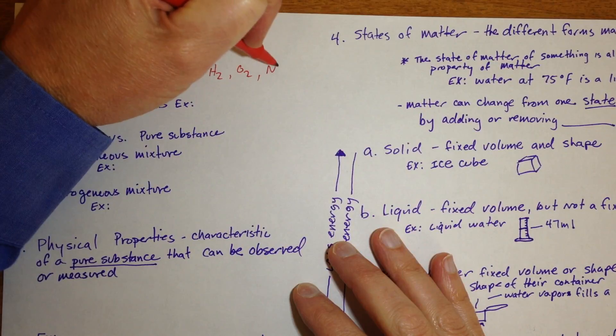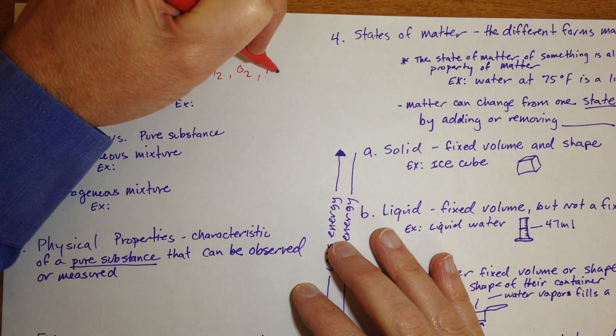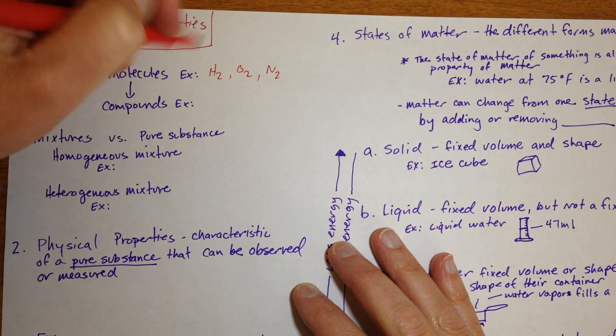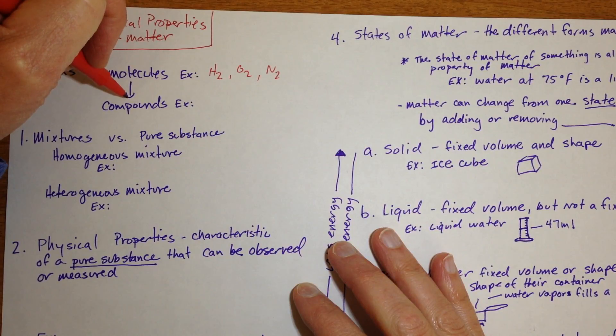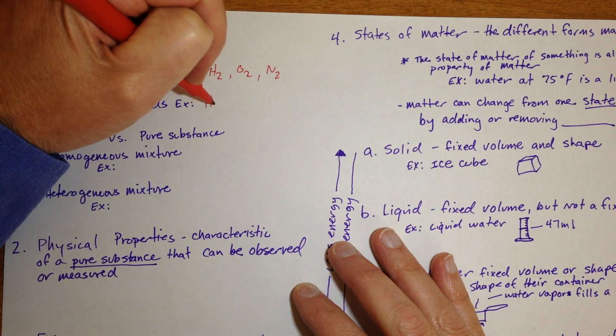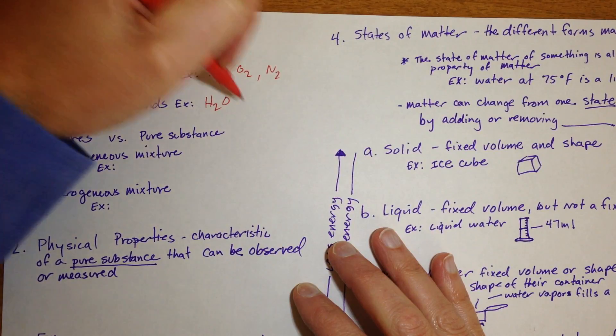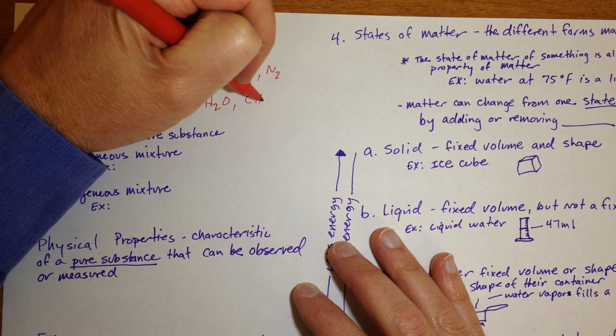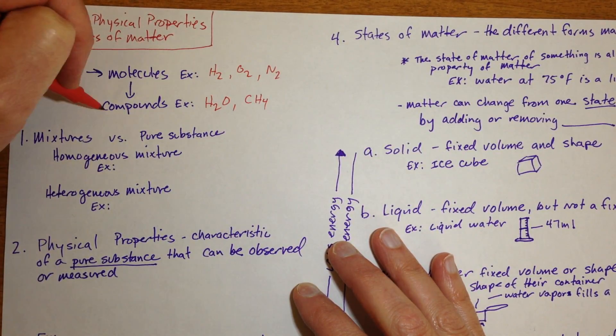Molecules are two or more atoms connected together. So hydrogen, oxygen, nitrogen are molecules. And when you have two or more different atoms connected together, they're also called compounds, like H2O has two different atoms connected together. Methane gas is also a compound.